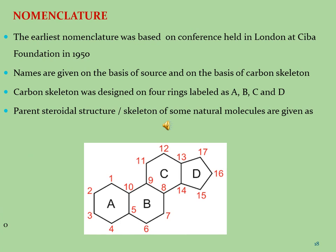Regarding the nomenclature of steroid molecules: in the beginning, there was no systematic way to name steroid molecules. However, it was decided at a conference held in London at the CIBA Foundation in the 1950s that names should be given on the basis of sources and the carbon skeleton of steroid molecules. It was also decided for the first time that the four rings of steroid molecules should be labeled A, B, C, and D. The total number of carbon atoms in a molecule are also mentioned. For molecules with 17 carbon atoms, the name given was gonane.